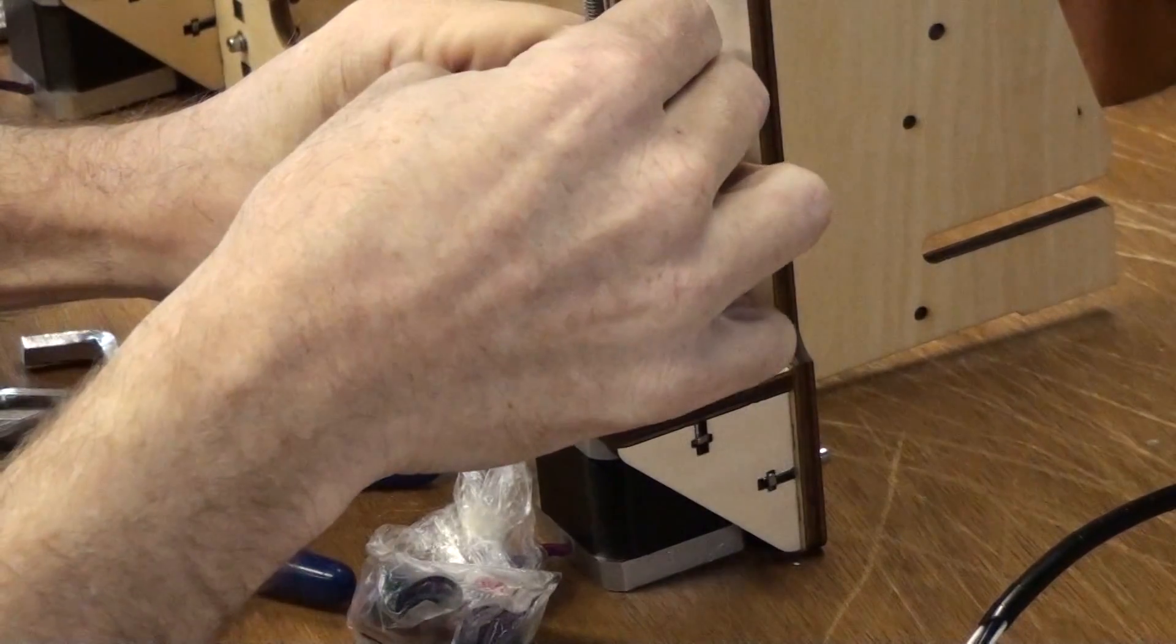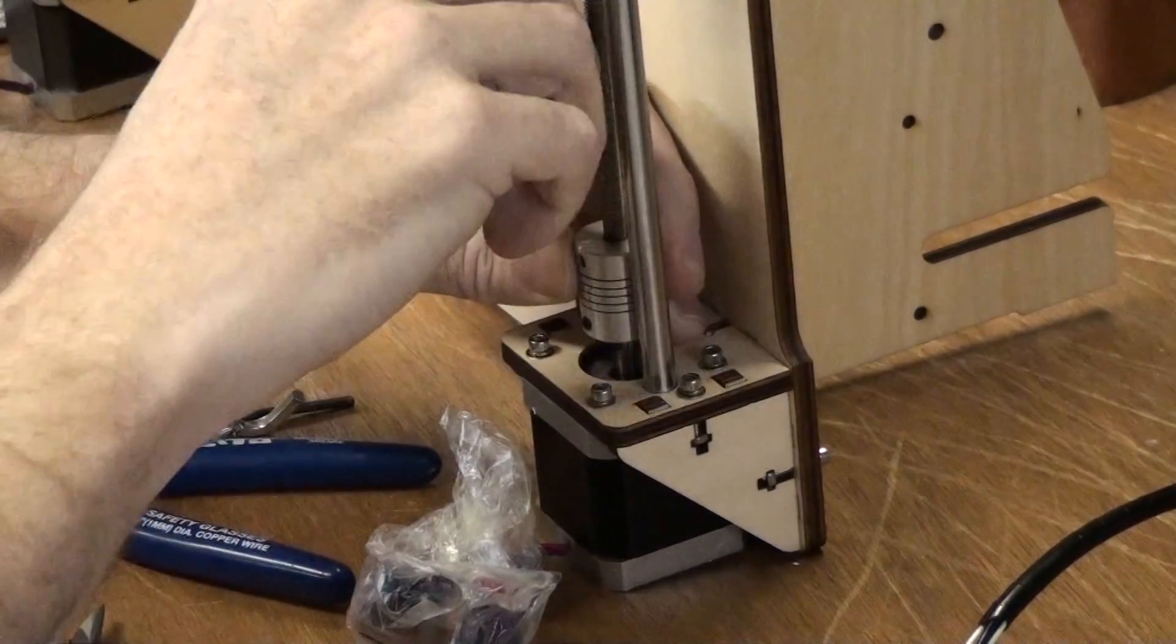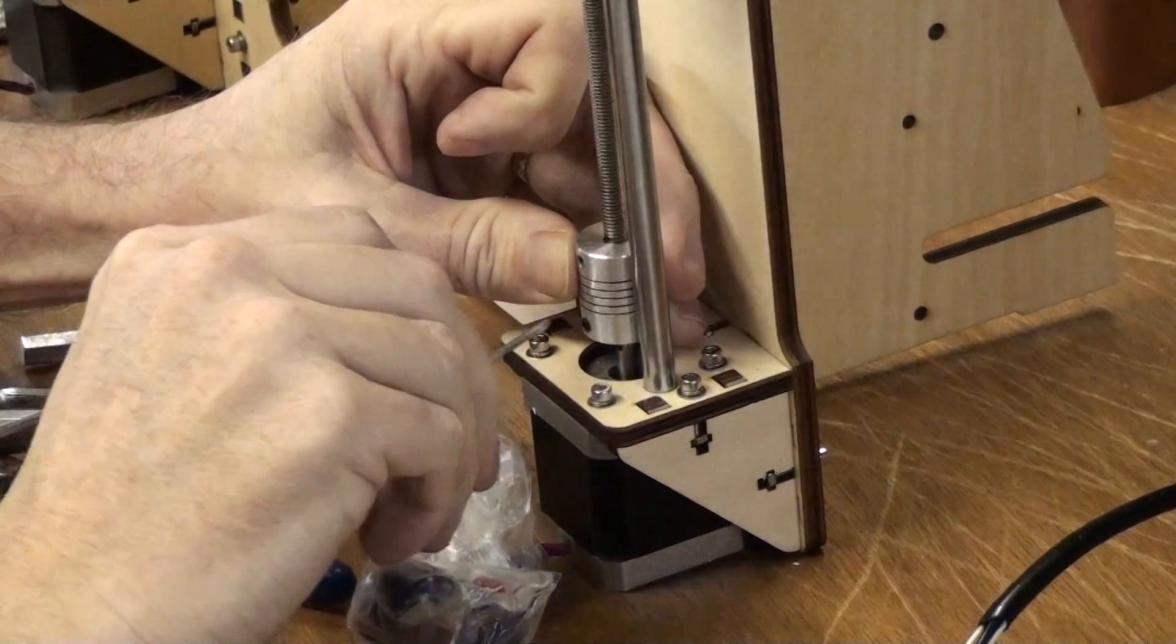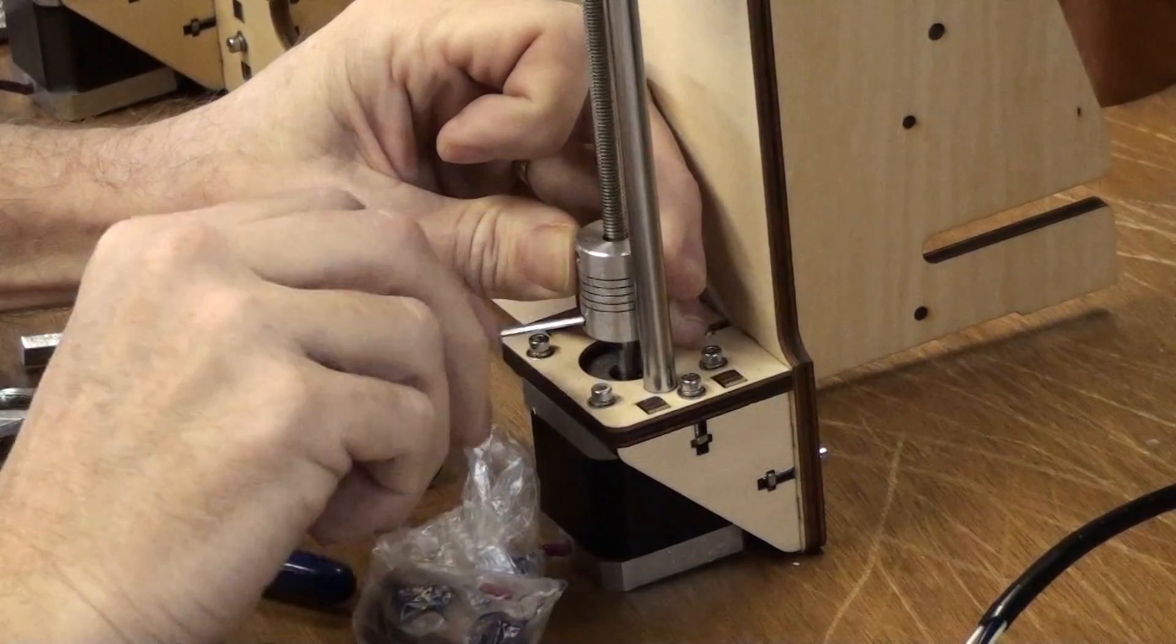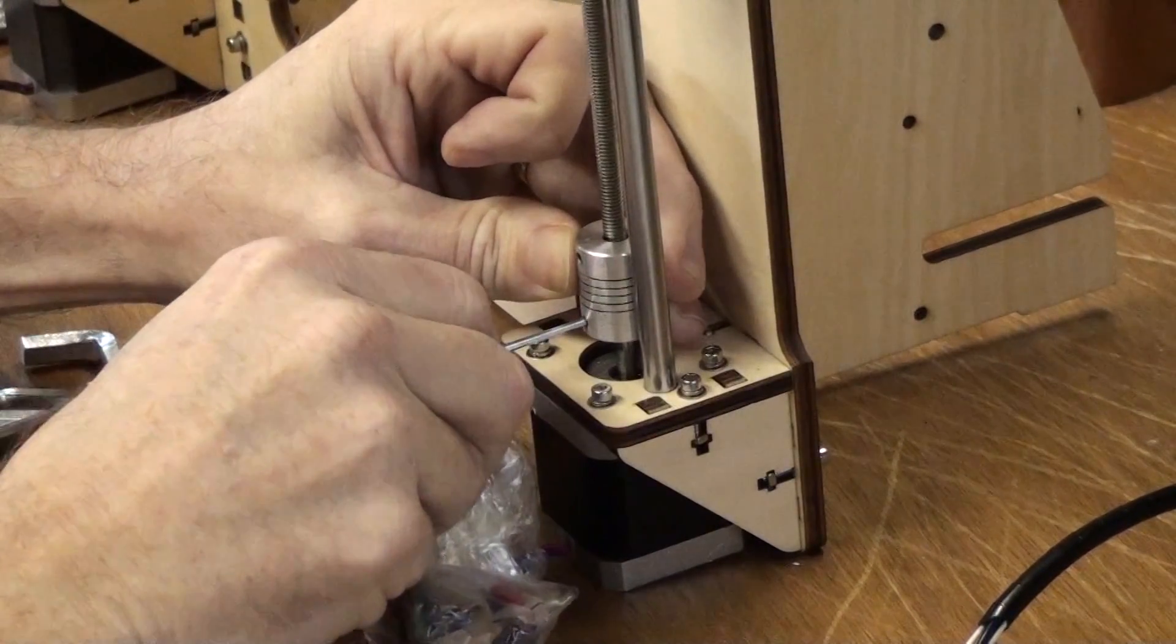These thread screws are 11 and a half inches long, and they are the two smallest ones that come with the kit. The smooth guiding rods for the Z axis are 12 and a half inches long.